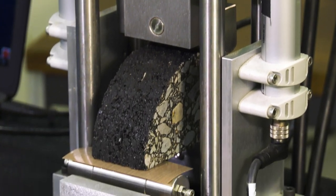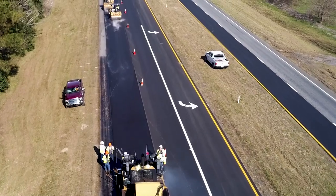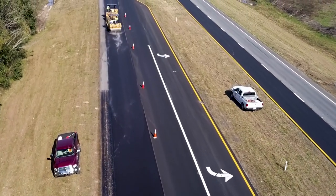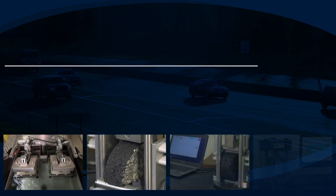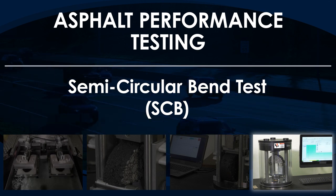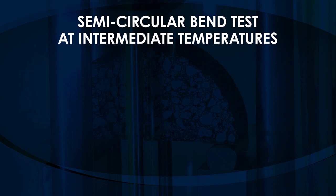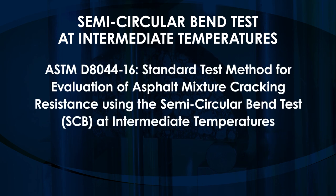Asphalt Mixture Performance Tests help agencies, contractors, and researchers improve asphalt performance and prolong service life of flexible pavements. This video is part of a series on asphalt performance testing and demonstrates the semicircular bend test, or SCB, at intermediate temperatures. The data from this test can be used as a performance indicator to determine an asphalt mixture's cracking resistance at climatic intermediate temperatures. This test is based on ASTM D8044-16, standard test method for evaluation of asphalt mixture cracking resistance using the semicircular bend test at intermediate temperatures.